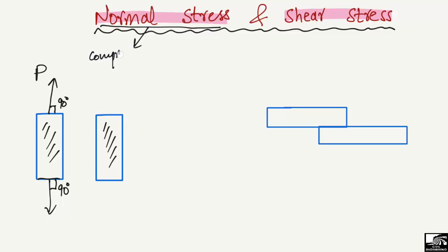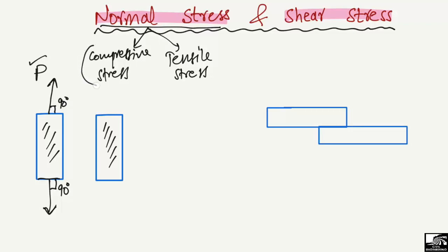There are two types of normal stresses: one is the compressive stress and the other one is the tensile stress. This one was the tensile stress because the load was acting in a tension direction — it created tensile stresses inside the body.